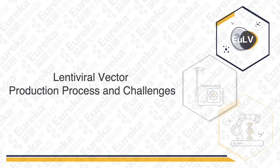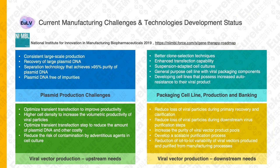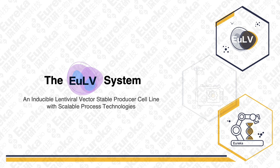So let's take a look at what challenges we are now facing. In 2019, the National Institute for Innovation in Manufacturing Biopharmaceuticals published the gene therapy roadmap, explaining the current manufacturing challenges and the technology development status, which can be summarized into four categories: plasmid production, packaging cell lines, and upstream and downstream challenges in viral vector production.